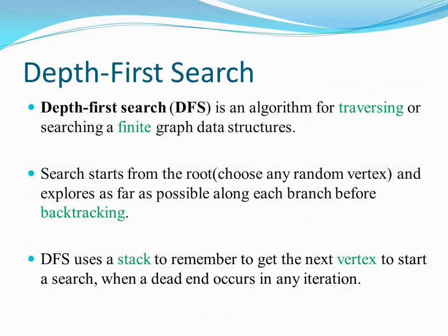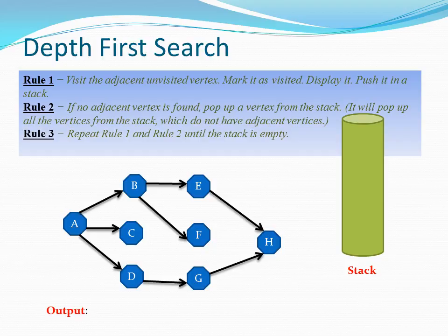DFS starts from the root and explores as far as possible along each branch before backtracking — going in depth in the search. The root node can basically be any node you choose from the graph. DFS uses a stack to remember the next vertex to start a search when a dead end occurs in any iteration.